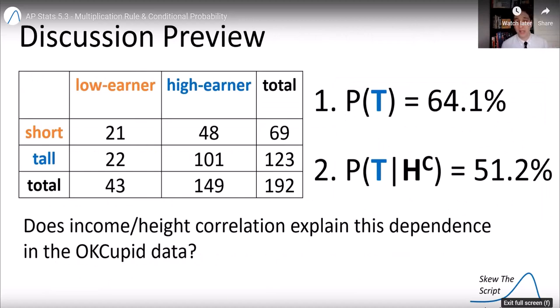So does the income-height correlation in this case, in the OKCupid profiles, explain this dependence? Well, not necessarily.